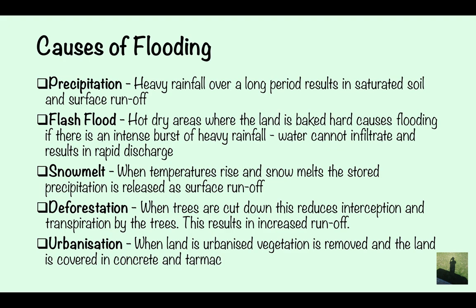Snow melt: when temperatures rise and snow melts, the stored precipitation is released as surface runoff. The heat causes the snow and ice to melt, causing water to flow as surface runoff. Deforestation: when trees are cut down, interception and transpiration are reduced, which results in increased runoff.